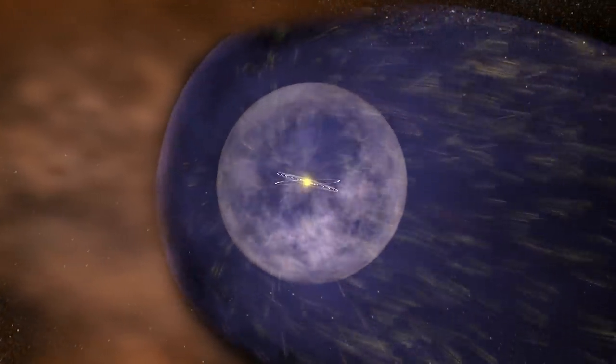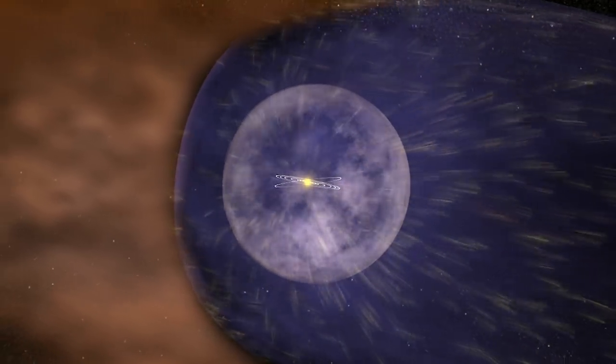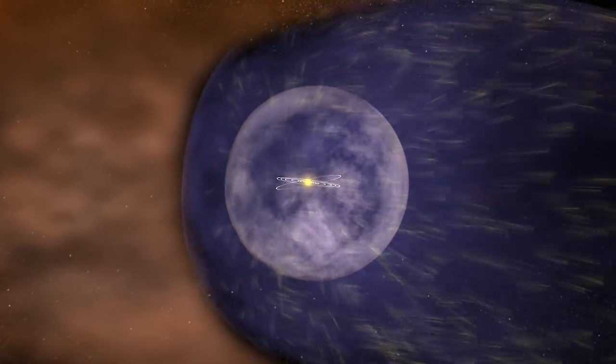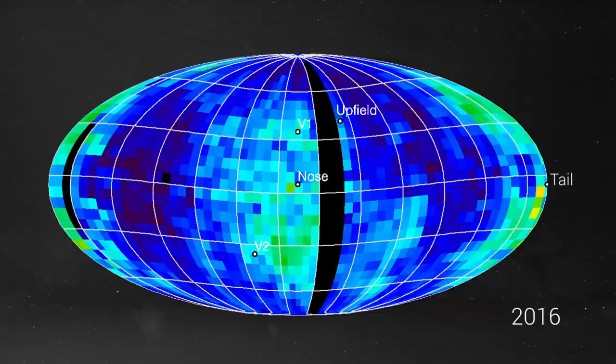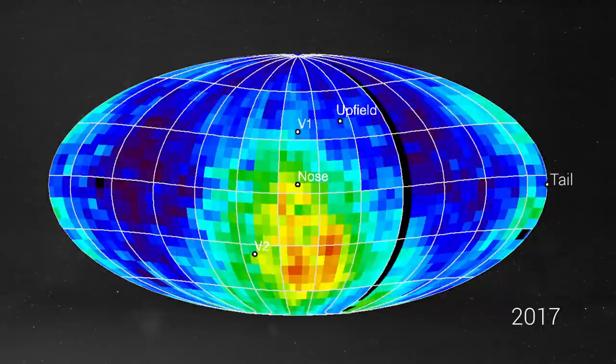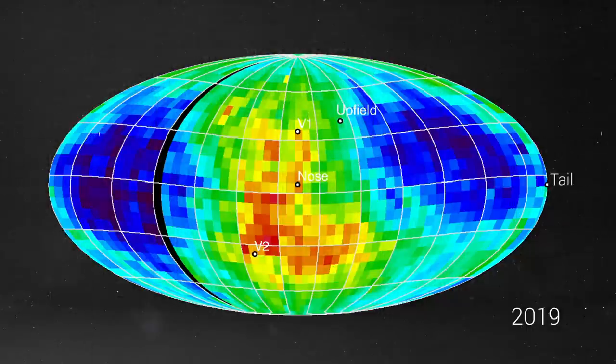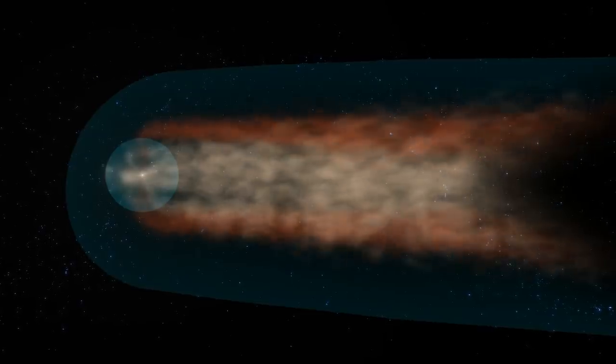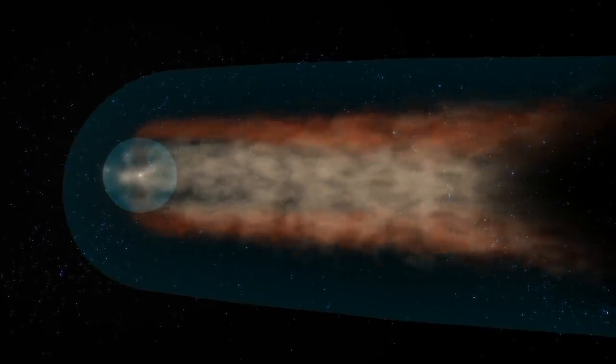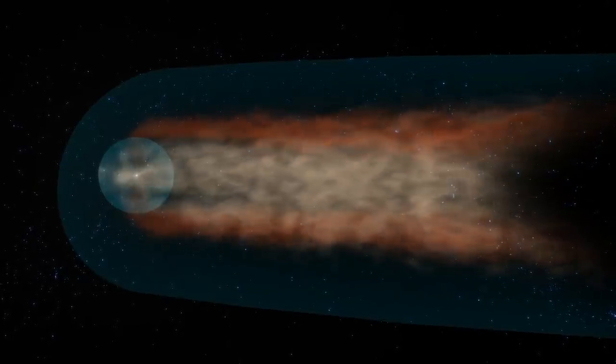From tracking this expansion, scientists found that the nose and tail were not symmetrical. If we compare the maps, ENAs from that big 2014 solar wind increase have returned from the nose, but they haven't returned from the tail yet, suggesting that the tail is much farther away from the sun than the nose. This indicates that the heliosphere looks more like a comet rather than a round bubble.